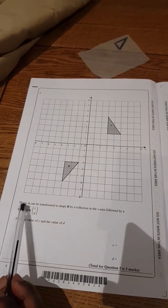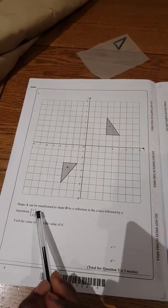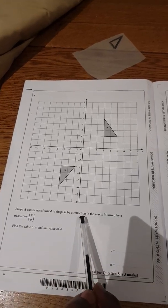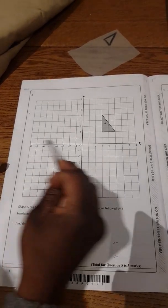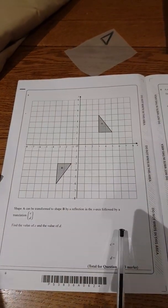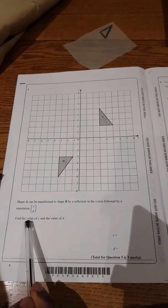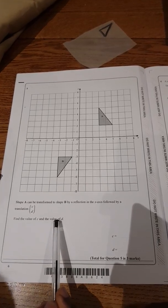This question says shape A can be transformed to shape B by a reflection in the x-axis followed by a translation CD. Find the value of C and the value of D.